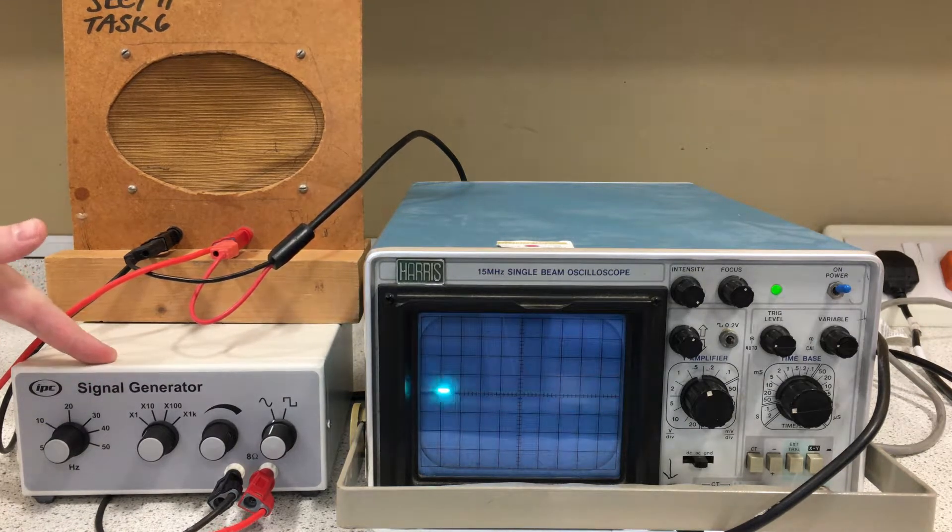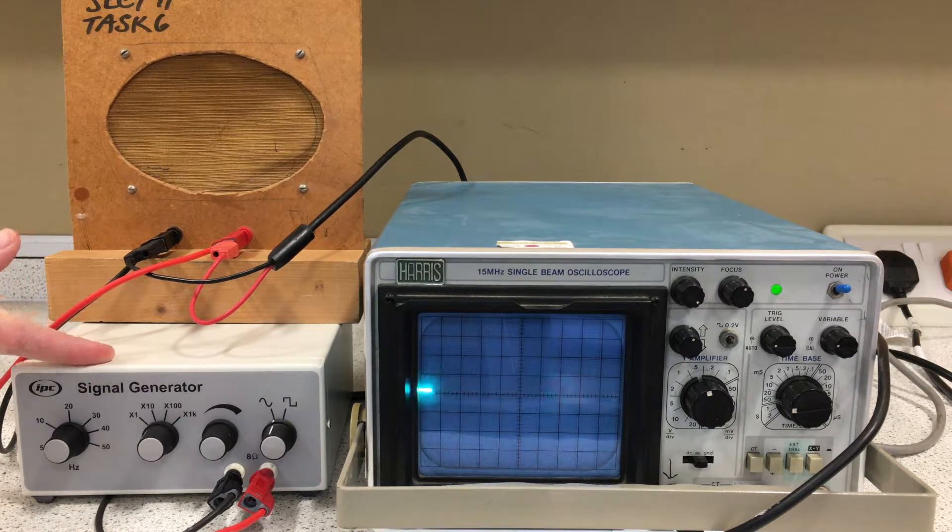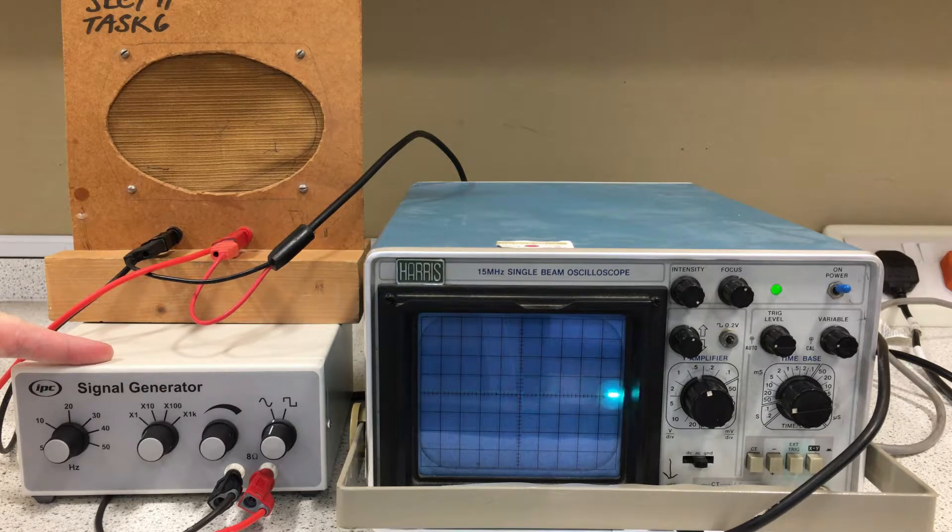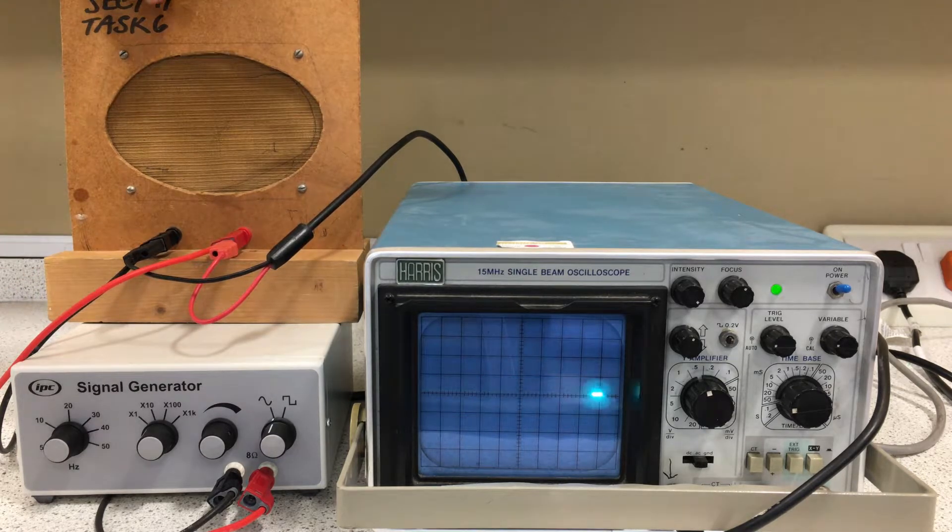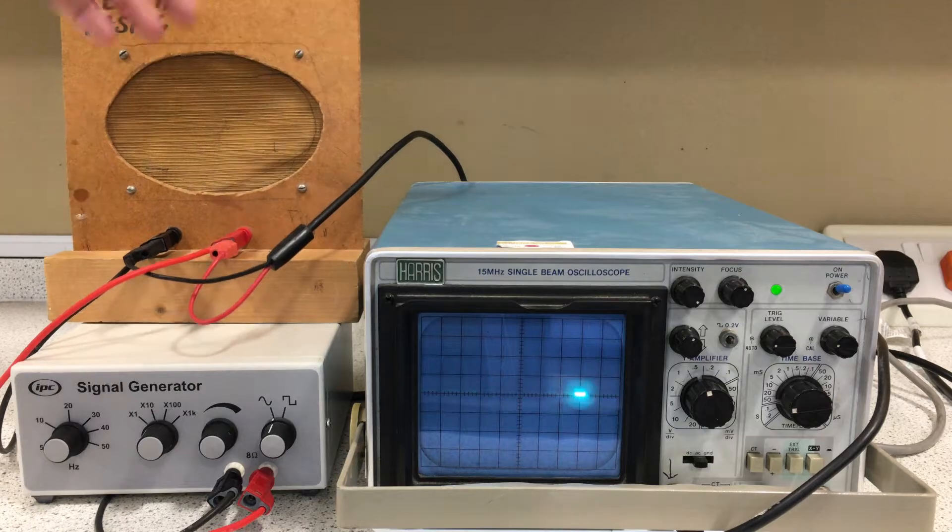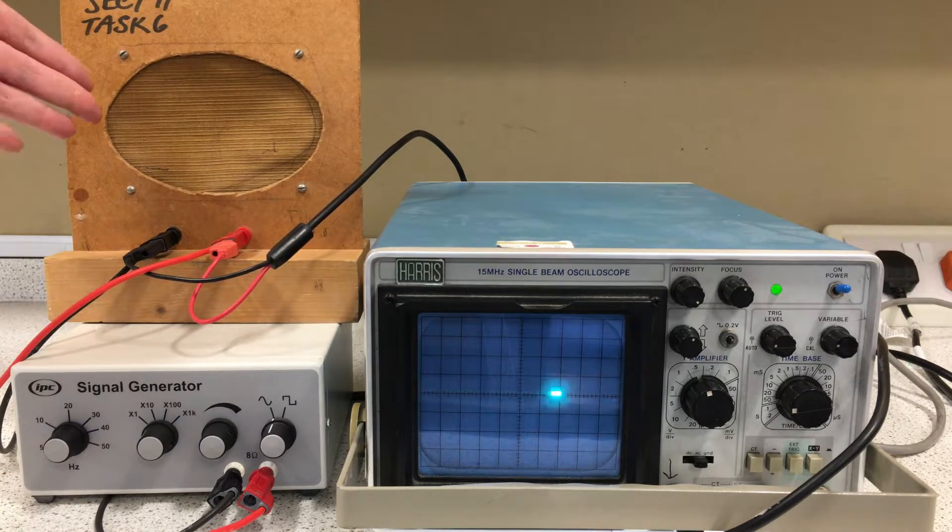This is a signal generator. It produces electrical signals of different amplitudes and different frequencies. This is a speaker. It takes the signal from the signal generator and turns it into sound waves that we can hear.